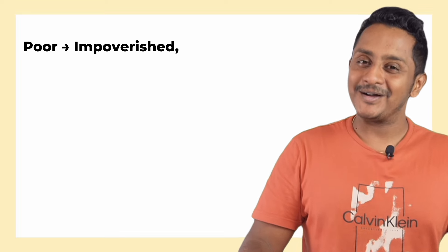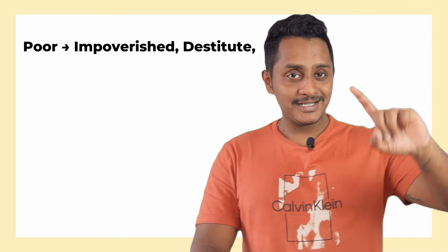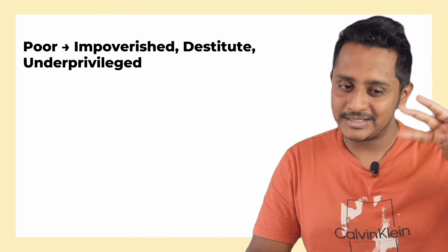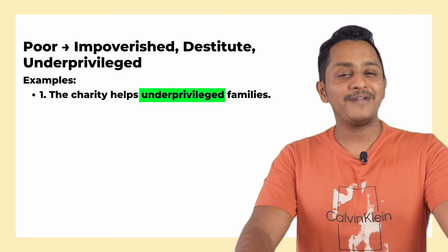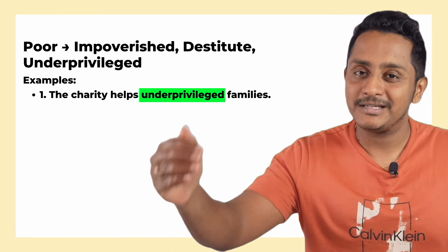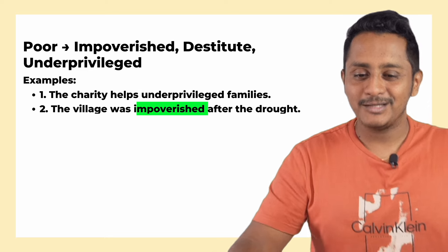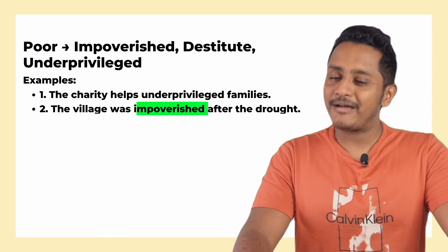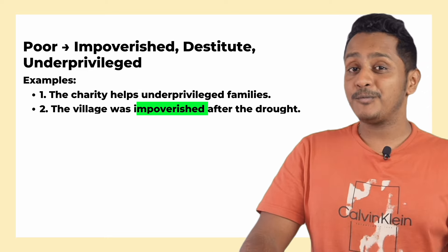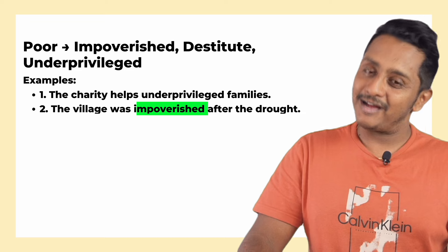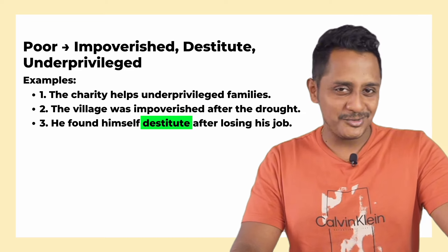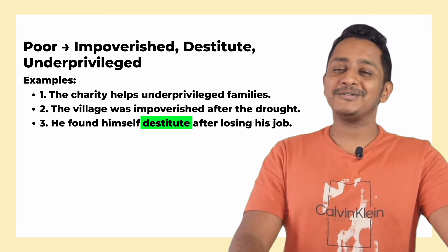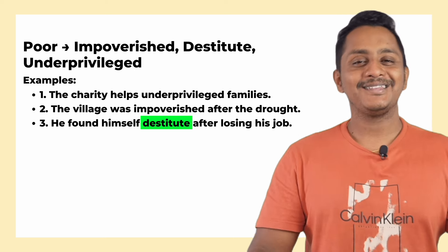The next word is 'poor.' Instead of 'poor,' use impoverished, destitute, or underprivileged. For example, instead of 'the charity helps poor families,' say 'the charity helps underprivileged families.' Instead of 'the village was poor after the drought,' say 'the village was impoverished after the drought.' Instead of 'he found himself very poor after losing the job,' say 'he found himself destitute after losing his job.'